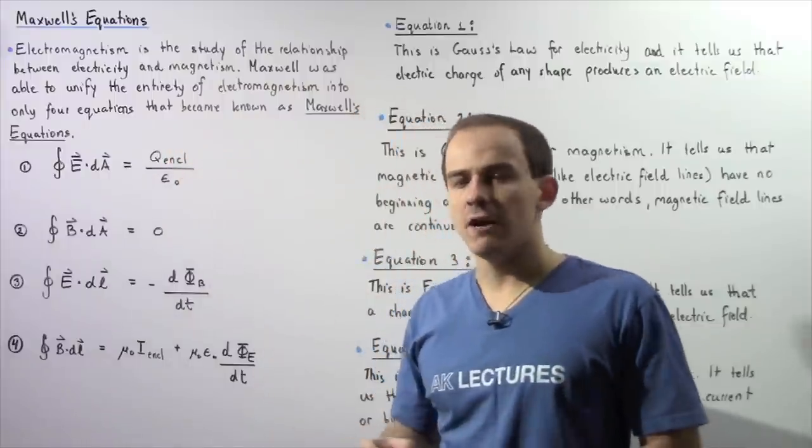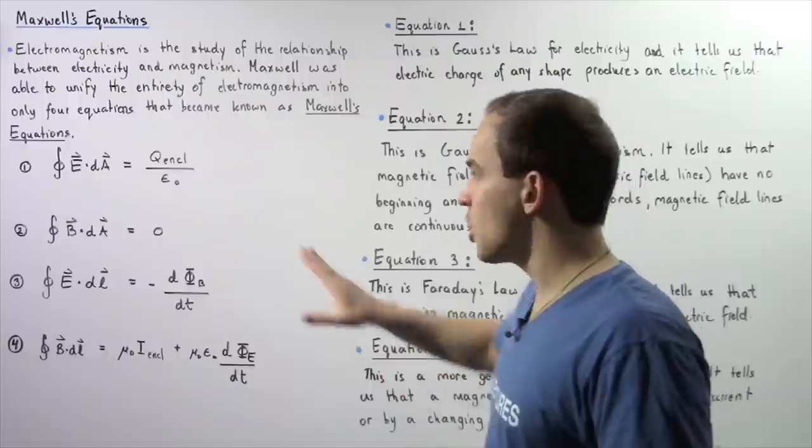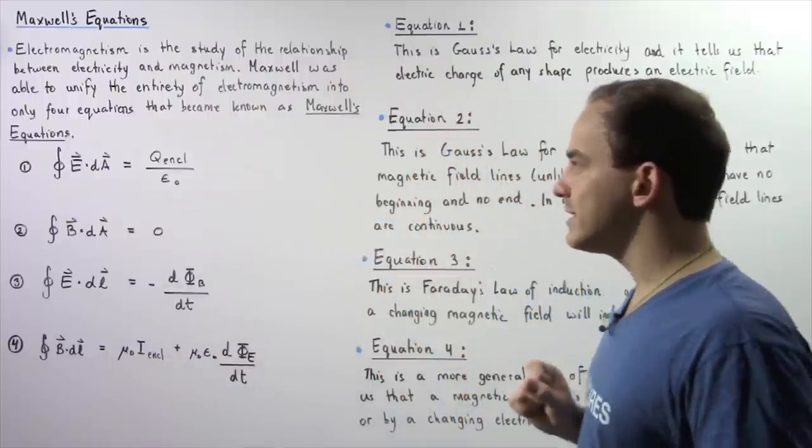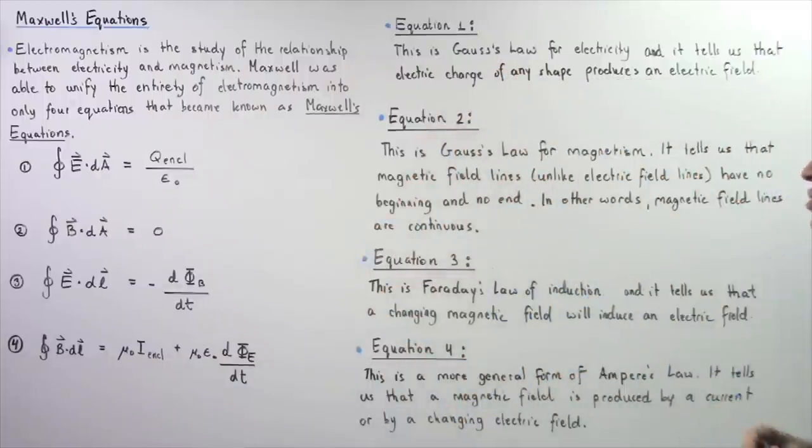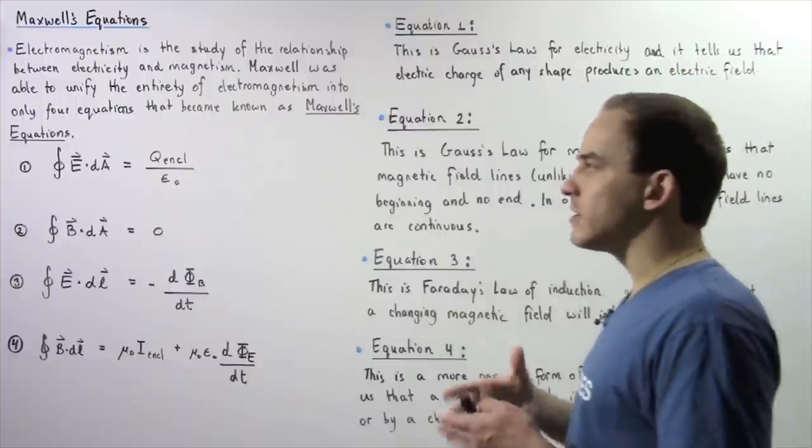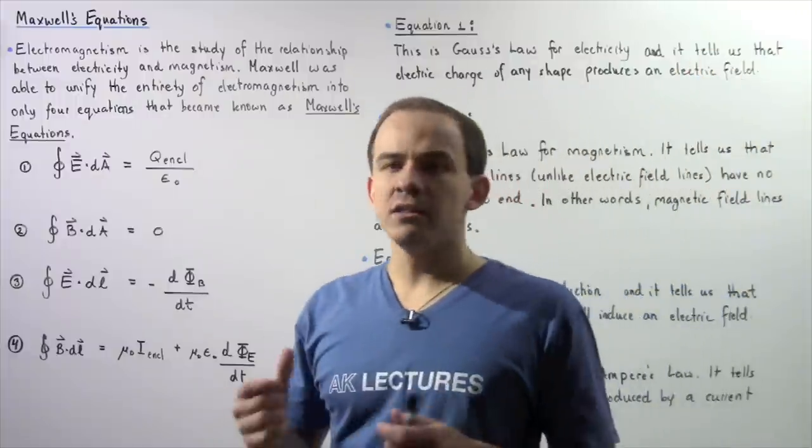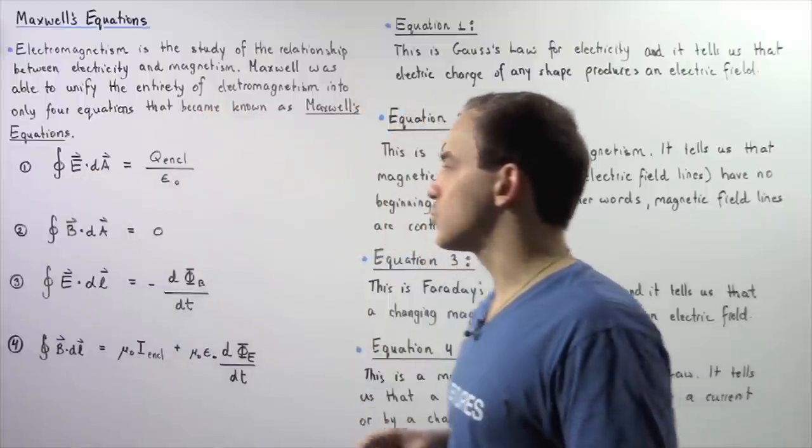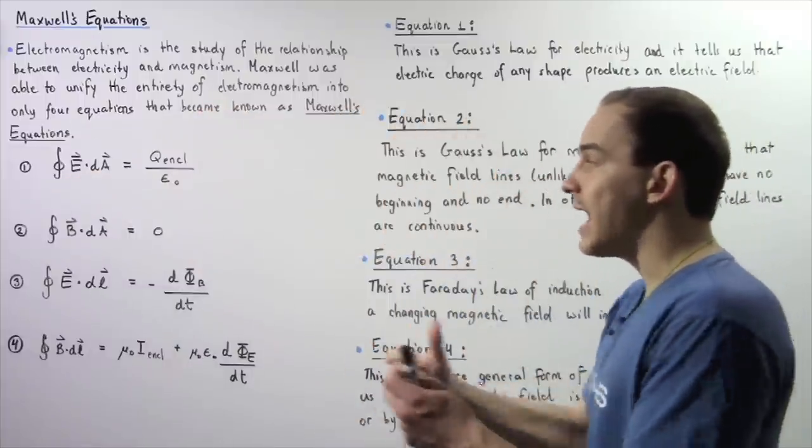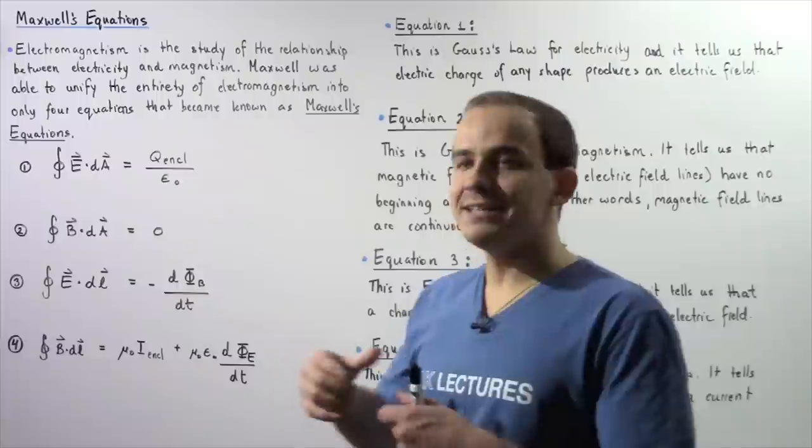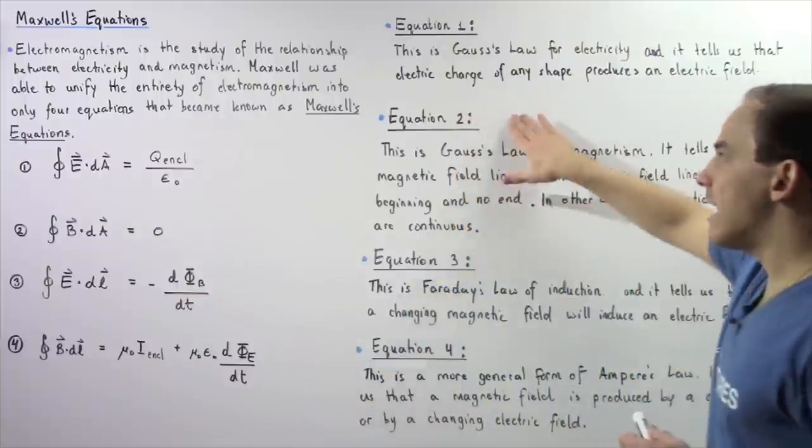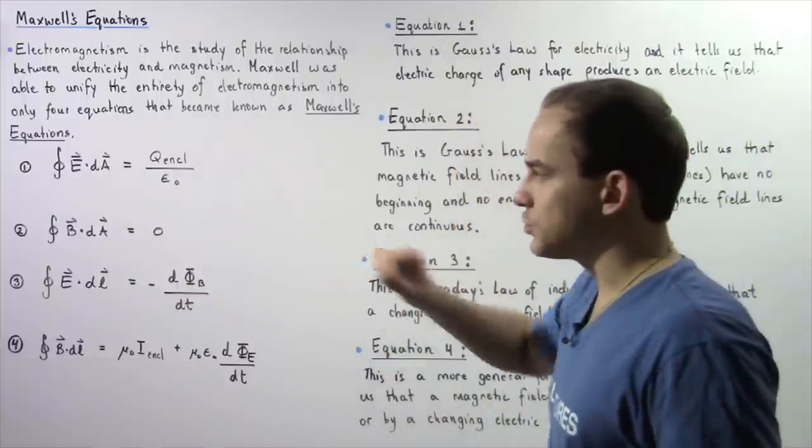known as permittivity of free space. This equation is known as Gauss's law for electricity and it tells us that any time we have an electric charge, that electric charge will produce an electric field, connecting the concept of charge and electric field.